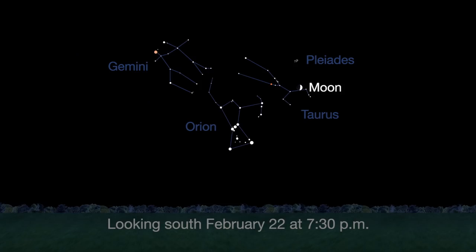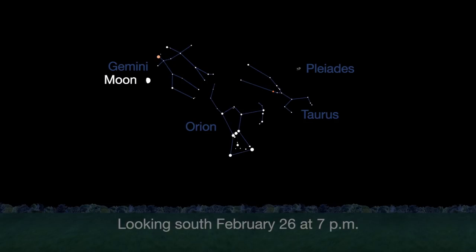Finally, the moon pairs up with the Pleiades on the 22nd, and with Pollux and Castor on the 26th.